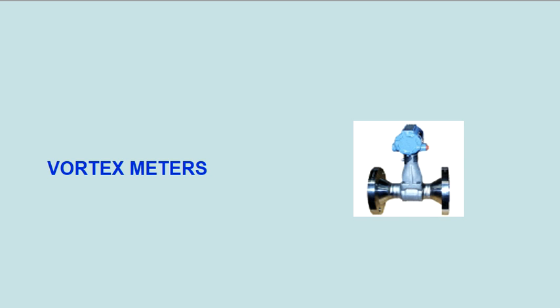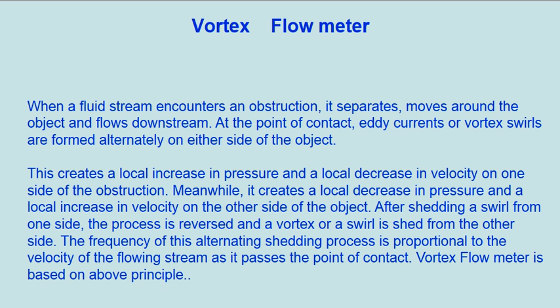At the point of contact, eddy currents or vortex swirls are formed alternately on either side of the object. This creates a local increase in pressure and a local decrease in velocity on one side of the obstruction. Meanwhile, it creates a local decrease in pressure and a local increase in velocity on the other side of the object.